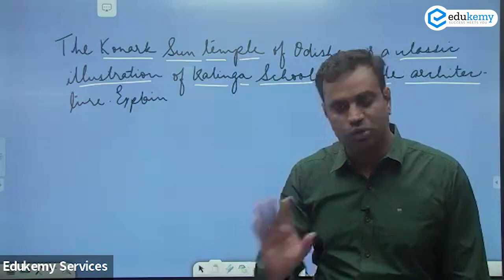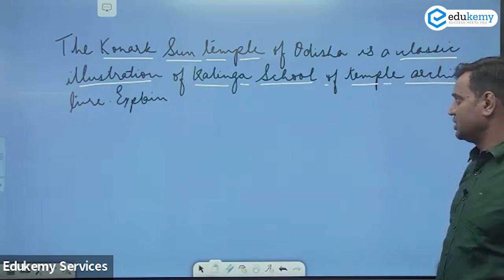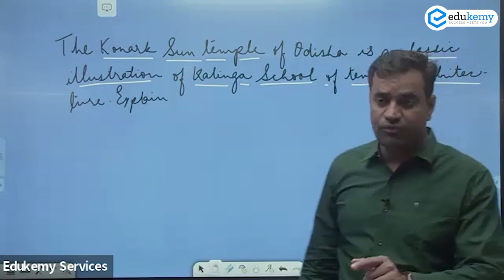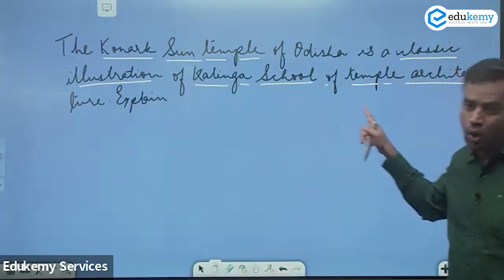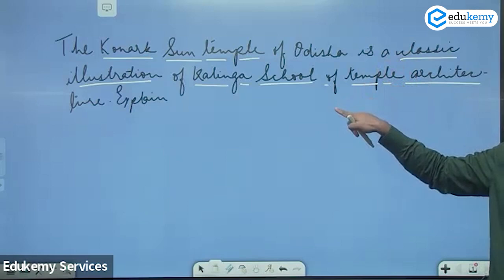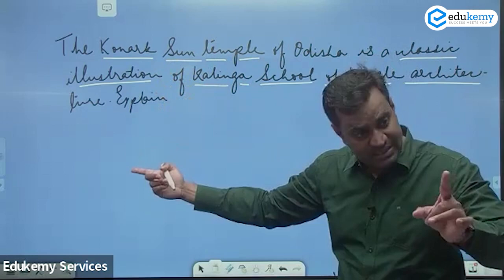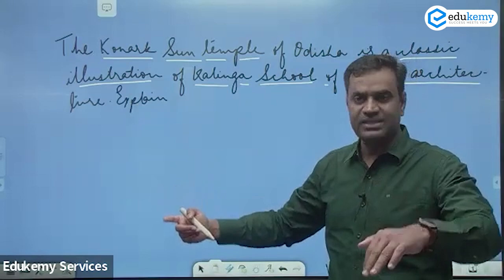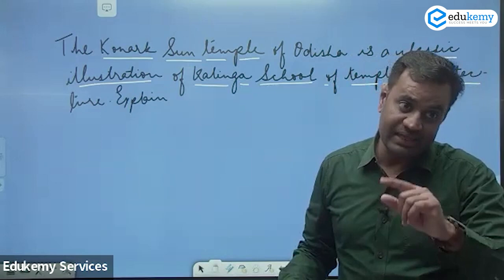If you know it well, great; if you don't, don't get tense — you have to draw an answer. This question is basically not about the Konark Sun Temple and its features. This question is fundamentally about the Kalinga School of Temple Architecture and how far the styles of Kalinga architecture are reflected in the Konark Sun Temple. The major theme of the question is Kalinga style of temple architecture.